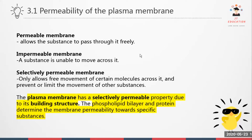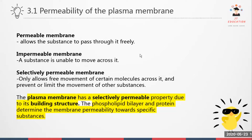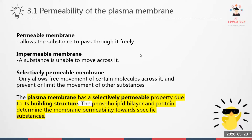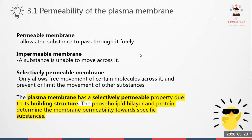Selectively permeable membrane means it allows only free movement of certain molecules across it and prevents or limits the movement of other substances. In other words, only certain molecules are allowed to move.